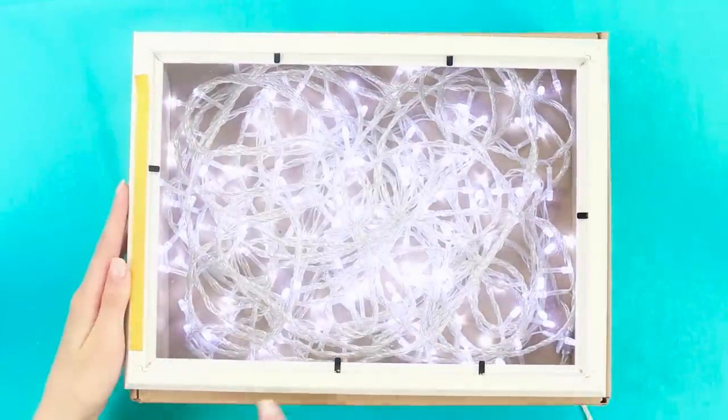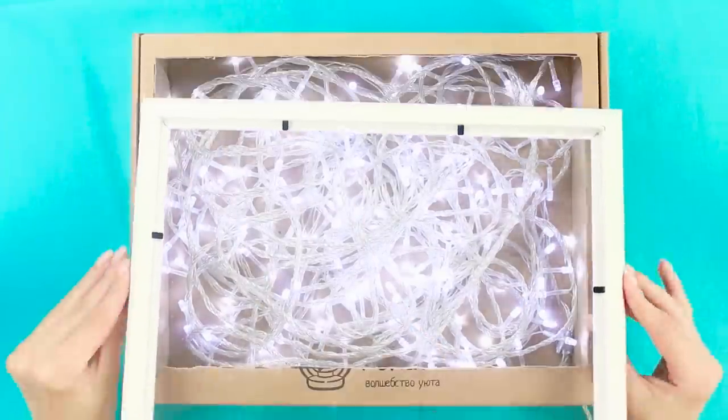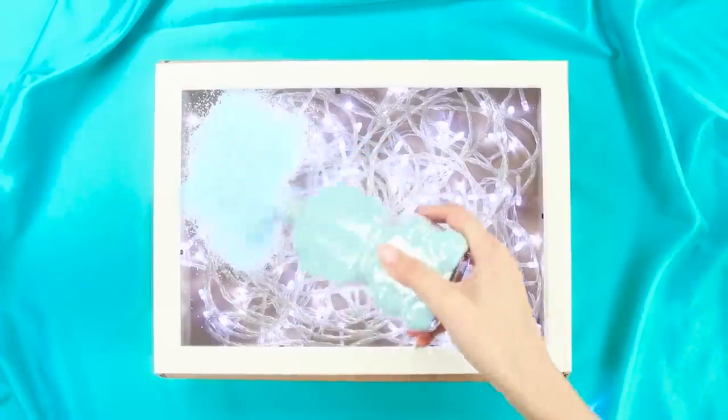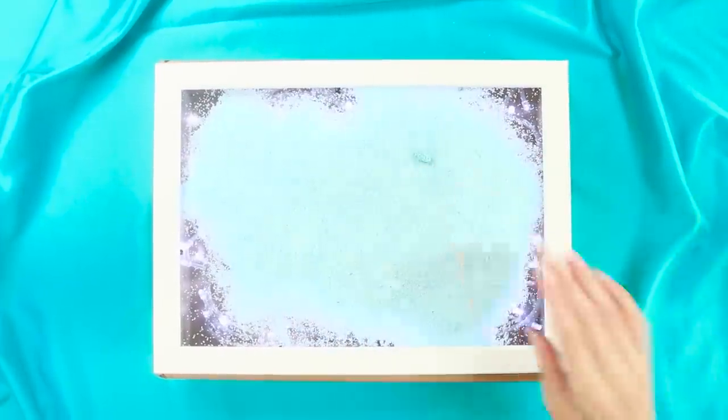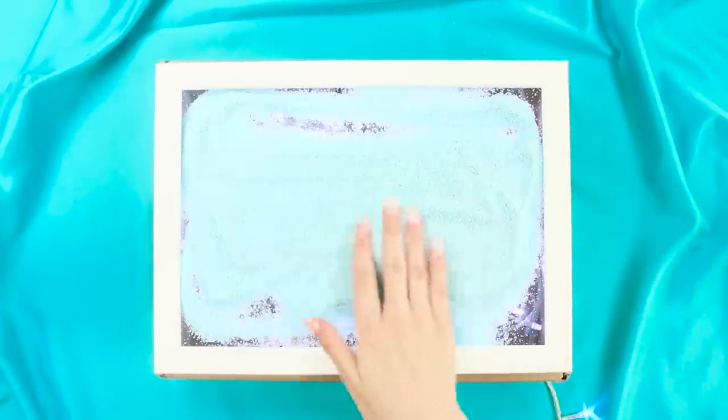Using a double-sided adhesive tape, attach the frame with the glass. Pour decorative sand or semolina on the glass. Distribute it along the surface and turn off the upper light.